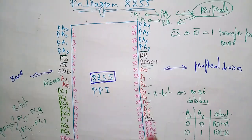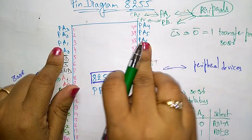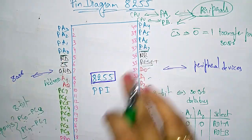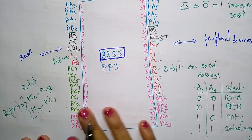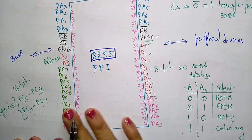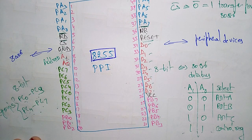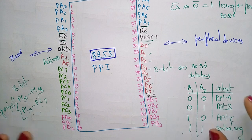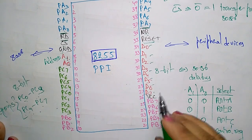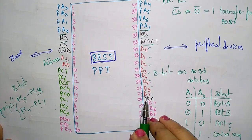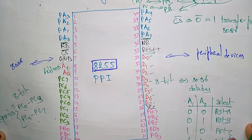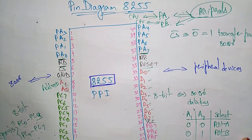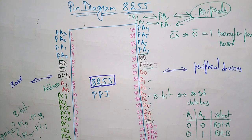Port A and Port B combine to perform operations together, whereas Port C is divided into two groups — higher and lower — which work separately using four data lines each. VCC is the power supply pin, and GND is the pin connected to ground. This concludes the pin diagram of 8255.